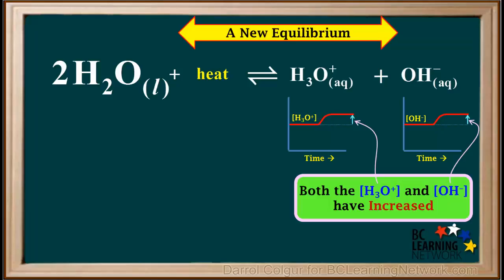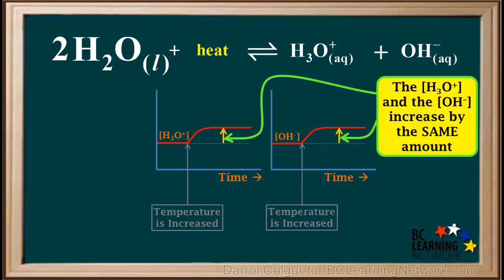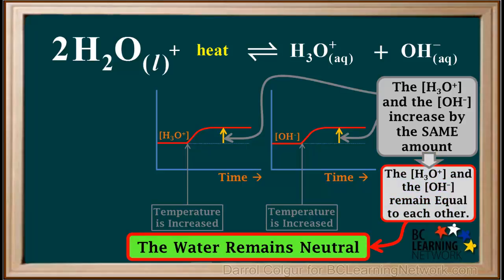After the shift, a new equilibrium is established in which the concentrations of H₃O⁺ and OH⁻ are both higher than they were before the shift. It is important to realize that when the temperature increases, the concentration of hydronium and the concentration of hydroxide increase by the same amount, and they remain equal to each other. Therefore, the water remains neutral.